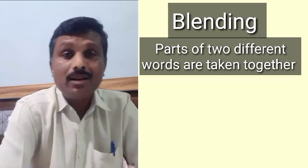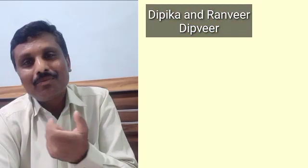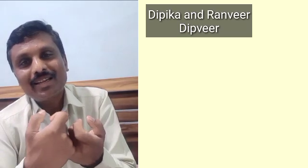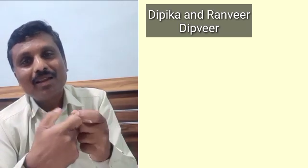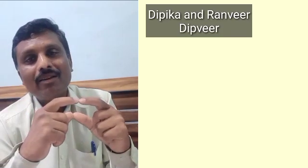You might know Deepika Padukone and Ranveer Singh — their combined name is Deepavir. From Deepika, 'Deep' is taken; from Ranveer, 'Veer' is taken, and that becomes Deepavir. So Deepavir is a blend of Deepika and Ranveer. This is the process of blending — you take two different words, clip them, and take the initial or later part of each.